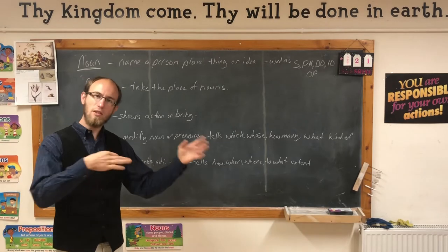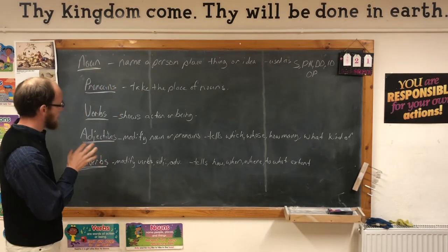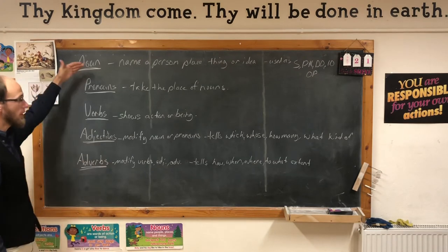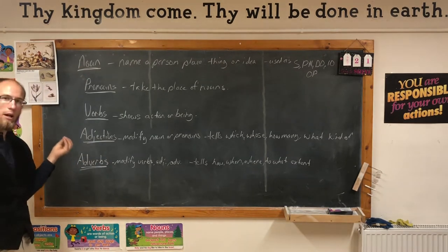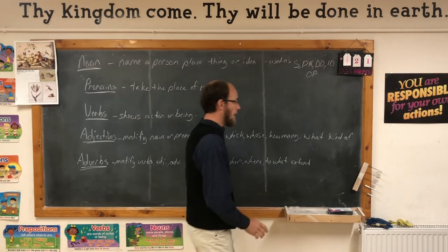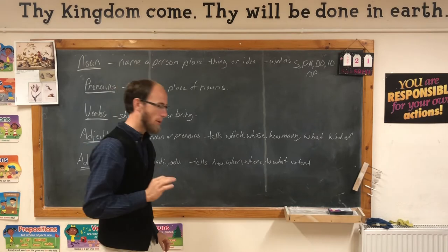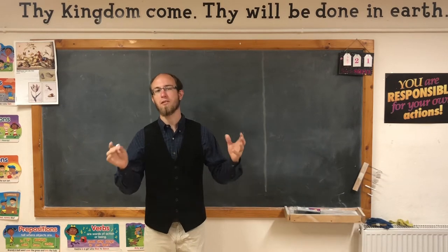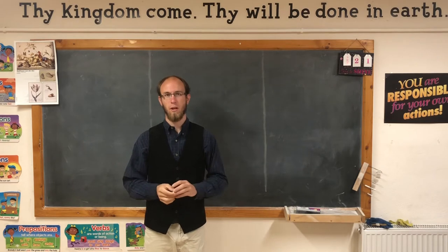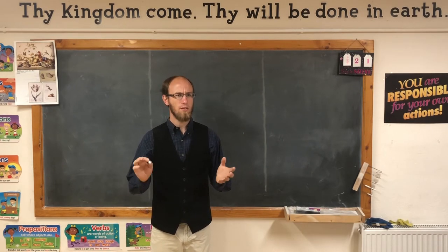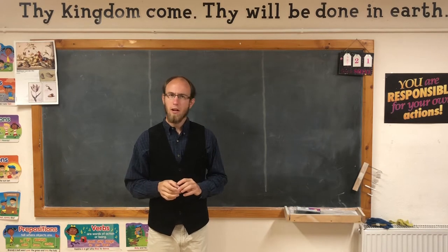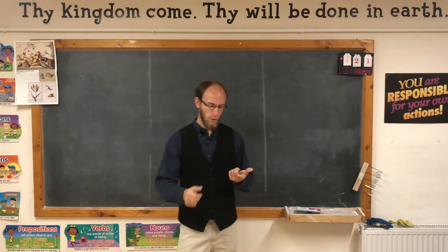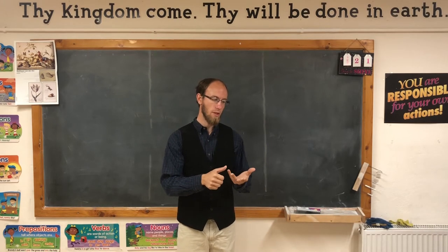If you can get these things stuck in your head very solidly, you're going to be a long way when it comes to diagramming. Now diagramming can often be a bit of a bear for students, but something about putting words on sticks is just scary — it's not, it's very easy and makes a lot of sense. We need to talk about some complements: direct objects, indirect objects, predicate nominatives, and predicate adjectives.